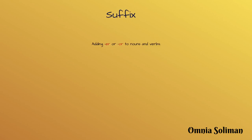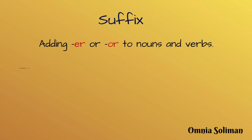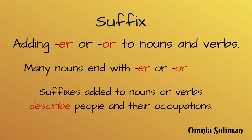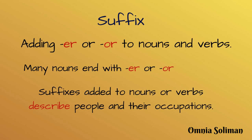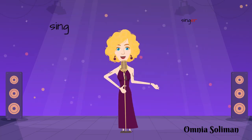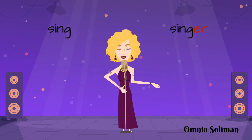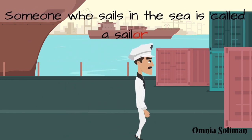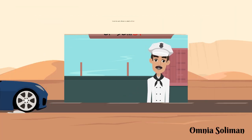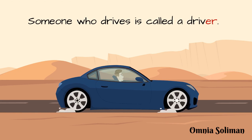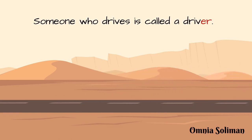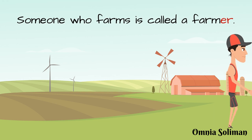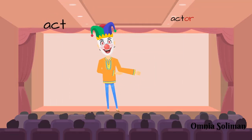Suffix. Adding -er or -or to nouns and verbs. Many nouns end with -er or -or. Suffixes added to nouns or verbs describe people and their occupations. Someone who sails in the sea is called a sailor. Someone who drives is called a driver. Someone who farms is called a farmer. Act — Actor.